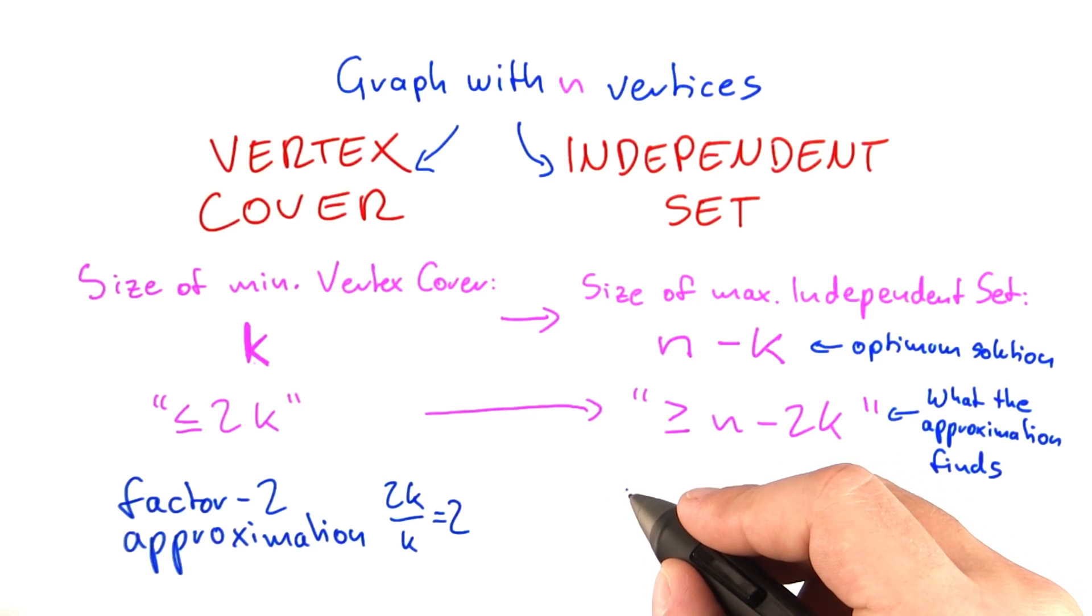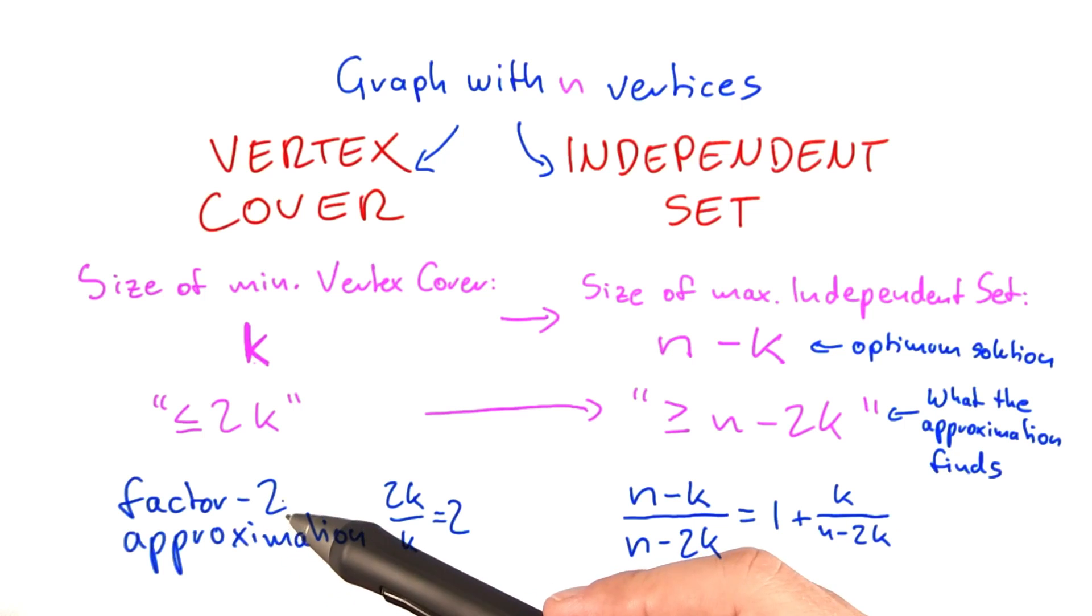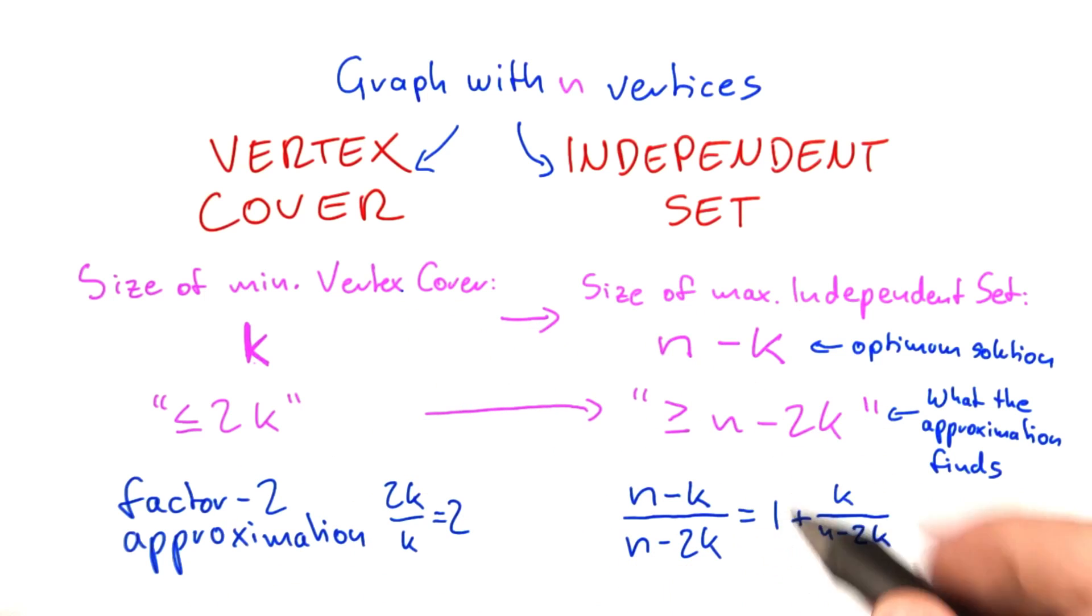The approximation factor here is the size of the optimum solution divided by what the approximation finds. So it's n minus k divided by n minus 2k, which equals 1 plus k over n minus 2k. So the factor 2 approximation algorithm for vertex cover is actually a factor 1 plus k over n minus 2k approximation algorithm for independent set.